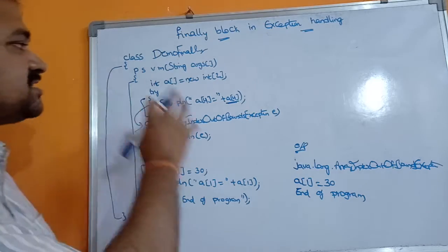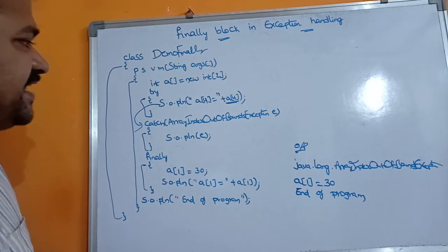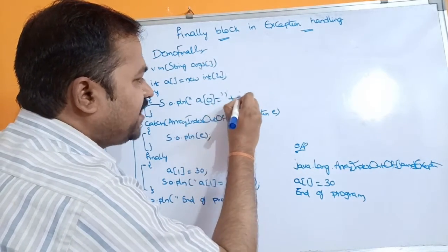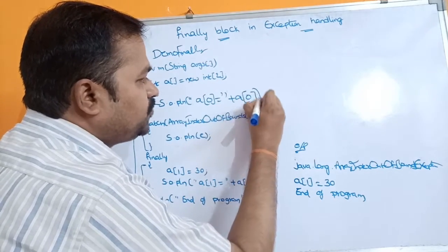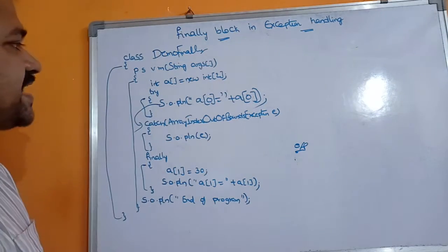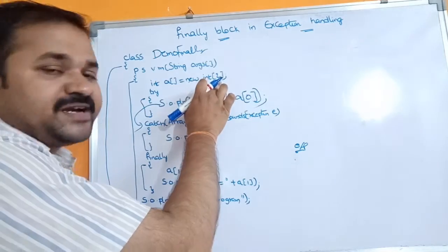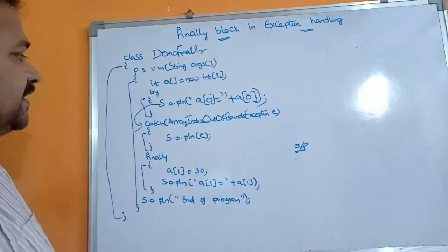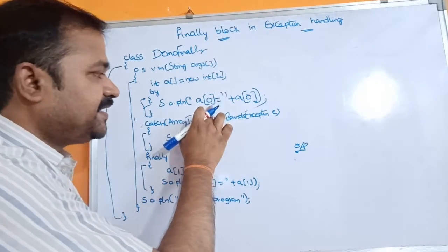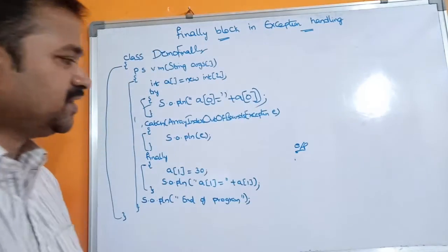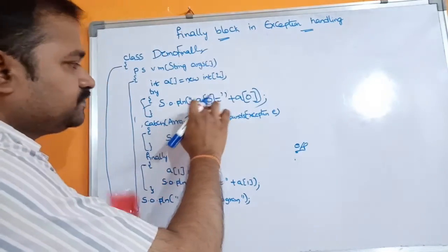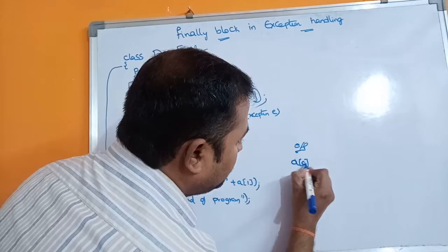Now let's do one modification. Instead of a[4], let us write the statement System.out.println(a[0]). We know execution starts from the main method. Memory is allocated for two elements, a[0] and a[1]. The try block executes and contains the statement System.out.println(a[0]). Memory is allocated for a[0] and a[1].